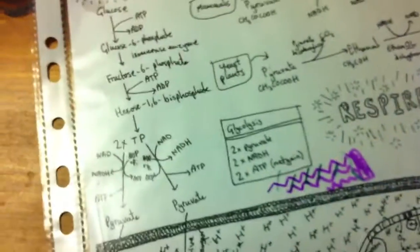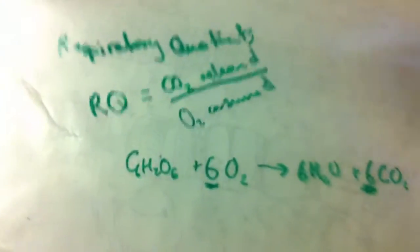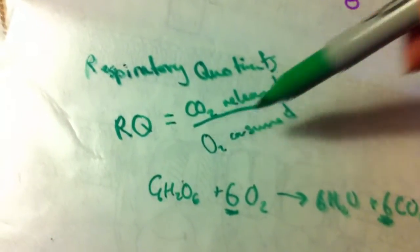Okay, that's very nice. So then the last bit is respiratory quotients. Which is RQ. So it's the CO2 released over the O2 consumed.